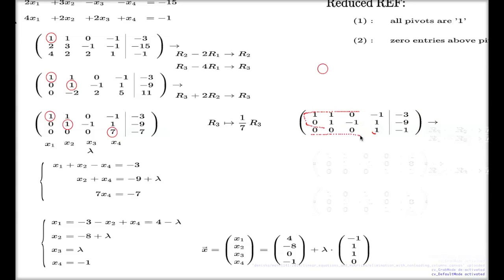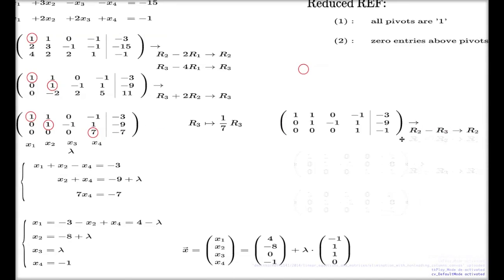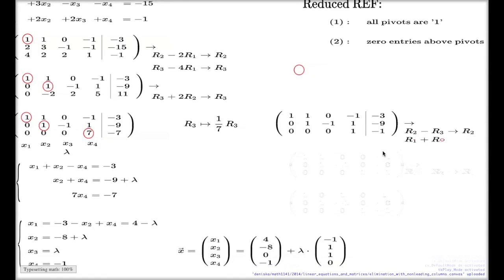And to vanish this element, I will use this pivot again, but this time I will add the third row to the second one. So the two operations I just described, here they are. This one and this one.